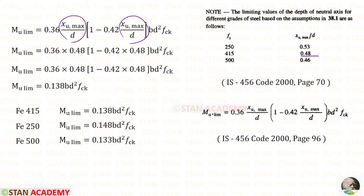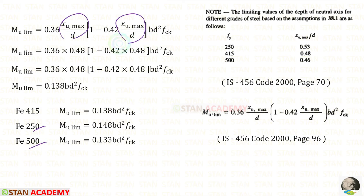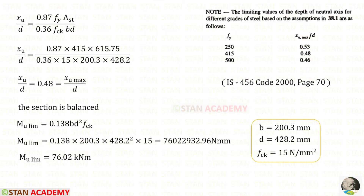The limiting moment of resistance formula simplifies to 0.138 × B × D² × FCK. For Fe 250 and Fe 500 the corresponding values of XU max/D are 0.53 and 0.46 respectively, giving two separate formulas. Applying all values, the limiting moment of resistance = 76.02 kNm.